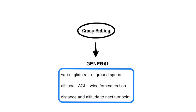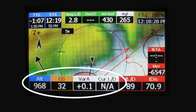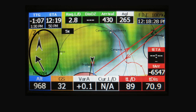Almost the same for me. I also put altitude to next turn point for some special situations. In the bottom left part of the screen I have my basic information with altitude, ground speed, vario and glide. On the left side I have wind and compass information.